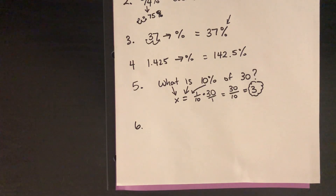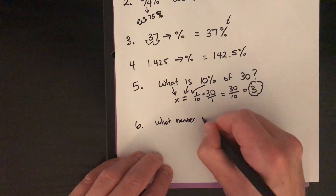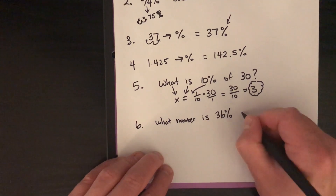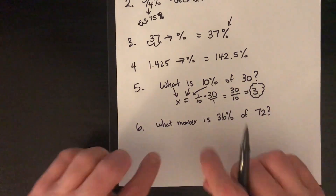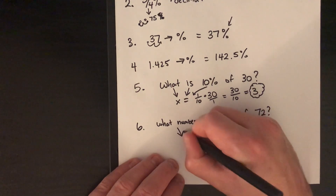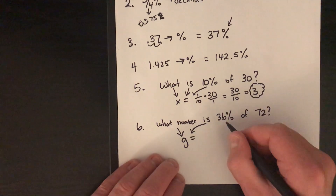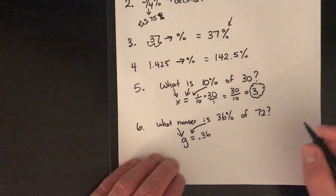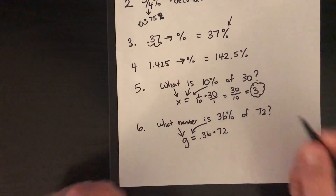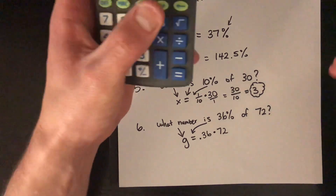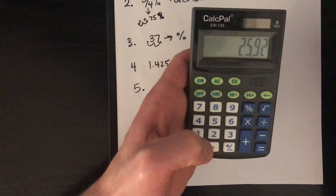Number 6: what number is 36% of 72? Using the same strategy: let g equal the unknown; 36% written as 0.36; 'of' means multiply; so g = 0.36 × 72. Using a calculator: 0.36 × 72 = 25.92.